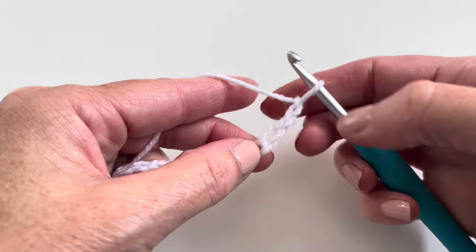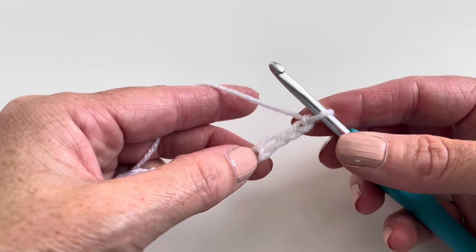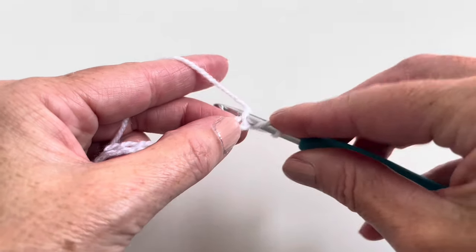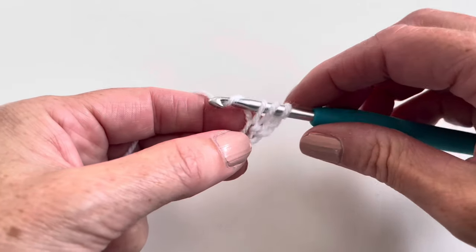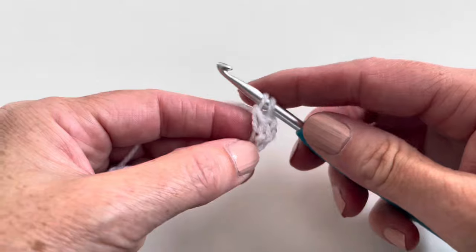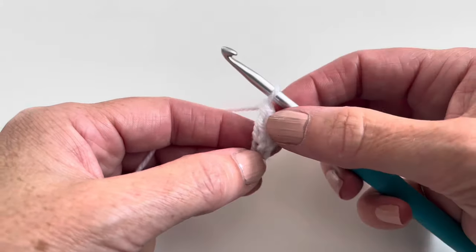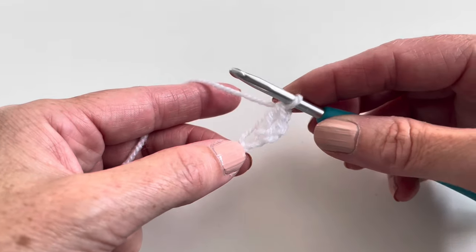3 and 4. And I will make 3 double crochet. I will yarn over, insert, pull up the yarn, yarn over and pull through 2, yarn over and pull through 2. So this is my first double crochet, and I will add 2 more.